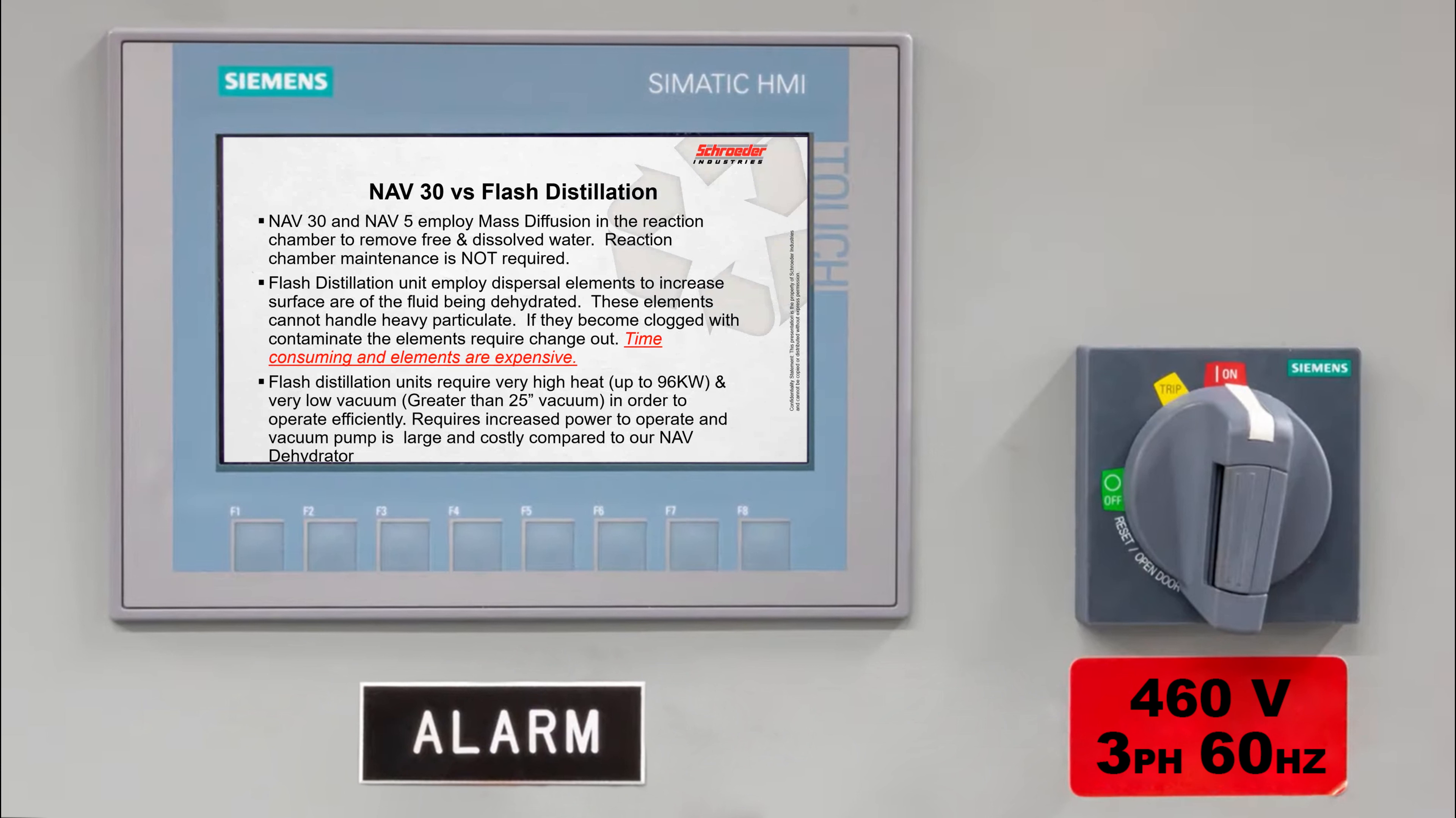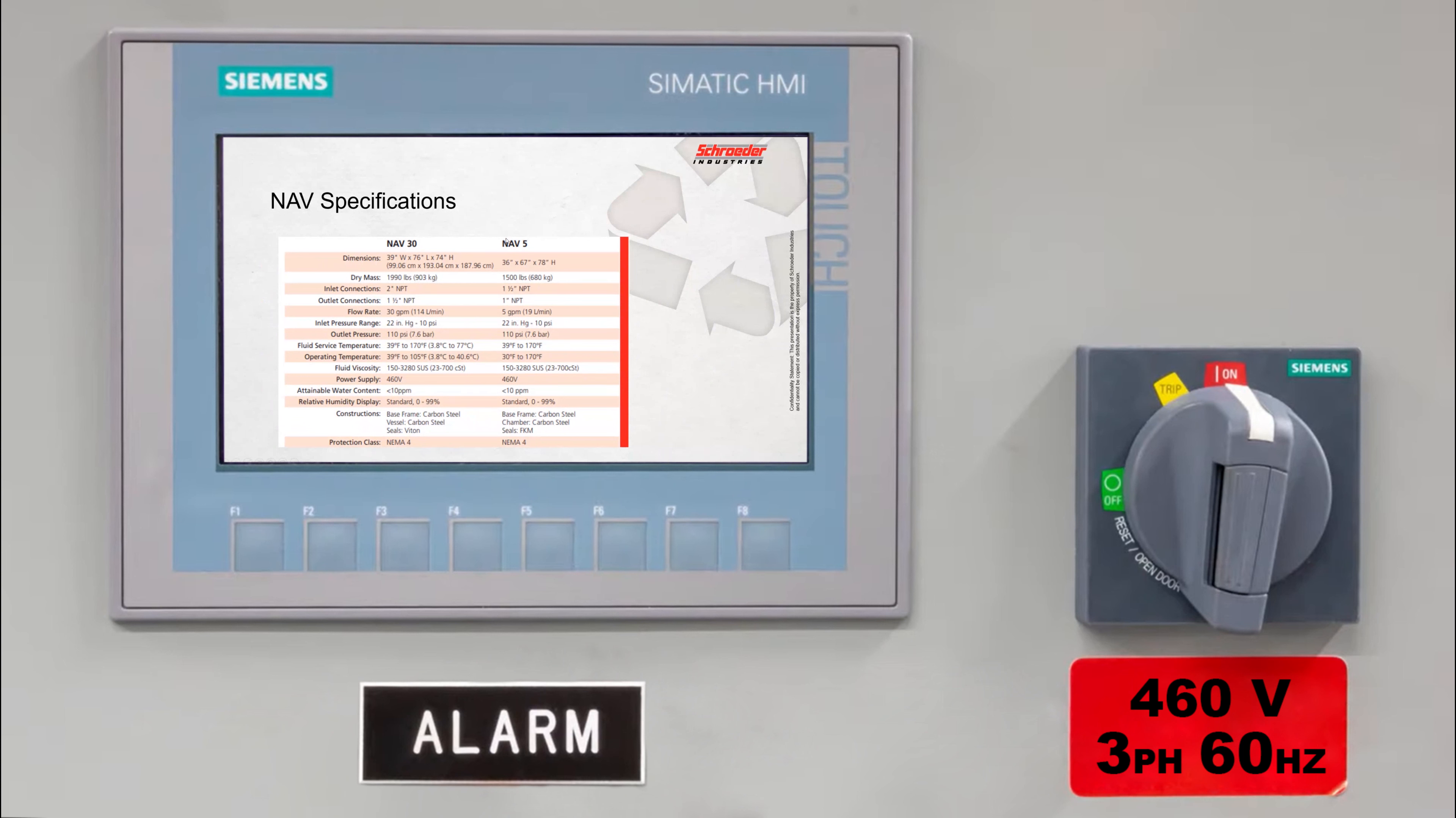Now when we go against the flash distillation units, we can pull out the free and dissolved water same methods, but we don't have any maintenance required in our reaction chamber. Those dispersal elements that are employed are somewhat expensive. I've seen them up to 200 bucks a piece, and if you got six of them, you're up to $1200 in elements on a maintenance schedule. So it adds up over a period of time. And once again, the high heat, you know, you're going to need some amperage to run that unit if you got 96 kilowatts of heat on there. So there are some pluses when you go with ours on that method.